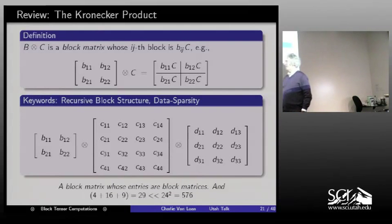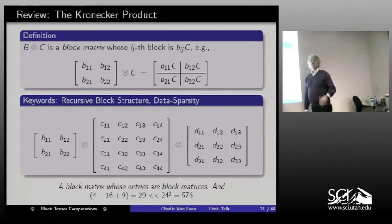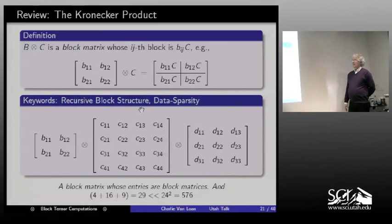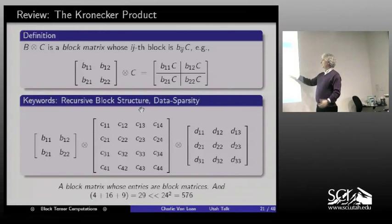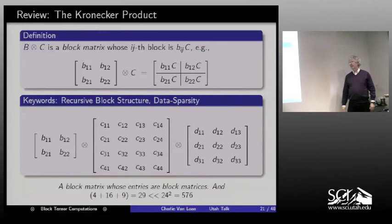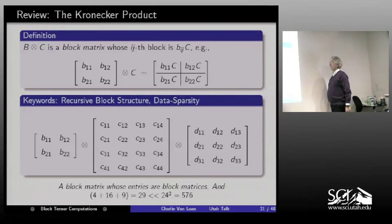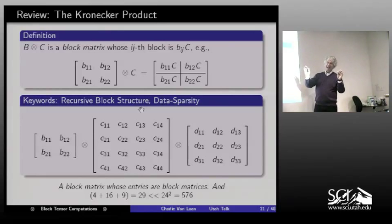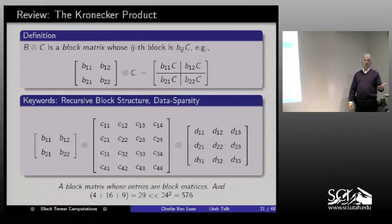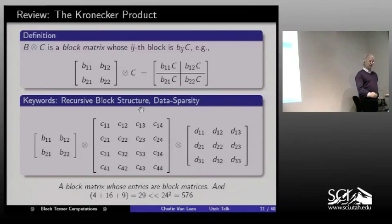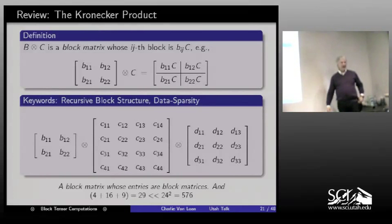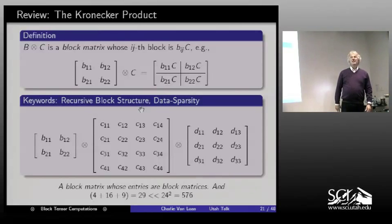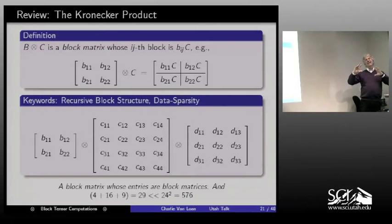If I had 1,000 of these things Kronecker-producted together, it would be 2^1,000 in size. These are data-sparse matrices — this particular example is a 24×24 matrix with 576 slots, but only 29 numbers define it. That is a data-sparse matrix. When you talk about approximating a large matrix with a Kronecker product, you are engaged in finding a data-sparse approximation of your matrix.